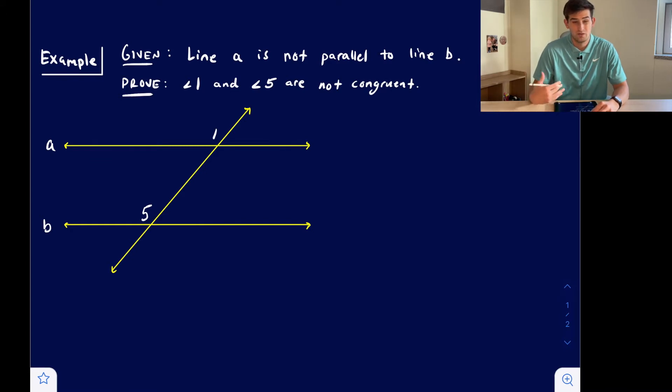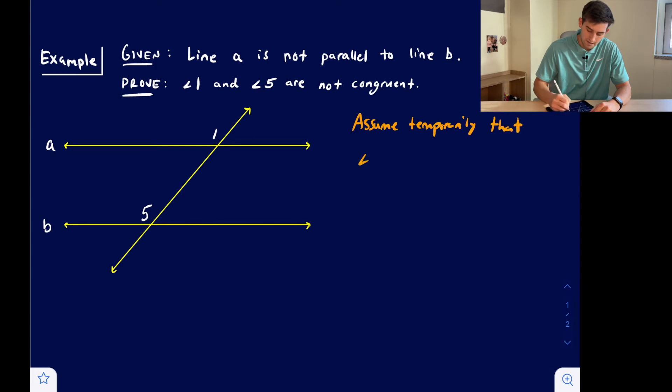So to start off, we're going to assume that the opposite is true. So we're going to say we want to assume temporarily that angle 1 is congruent to angle 5.